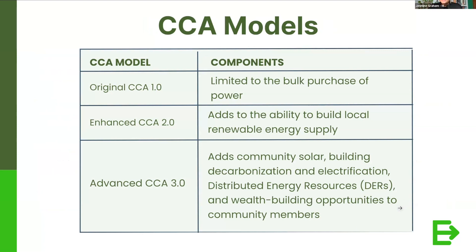CCA 1.0 is limited to the bulk purchase of renewable electricity. Out in California, they have CCA 2.0, which adds the ability to build local renewable energy supply — something not yet happening in New York but a model in California. What we're doing here is advanced CCA, or CCA 3.0. We know that emissions don't stop at electricity — there are emissions in all sectors. So we take a more holistic approach, folding in community solar, building electrification, distributed energy resources like solar and battery storage on your roof, as well as wealth building opportunities for community members.